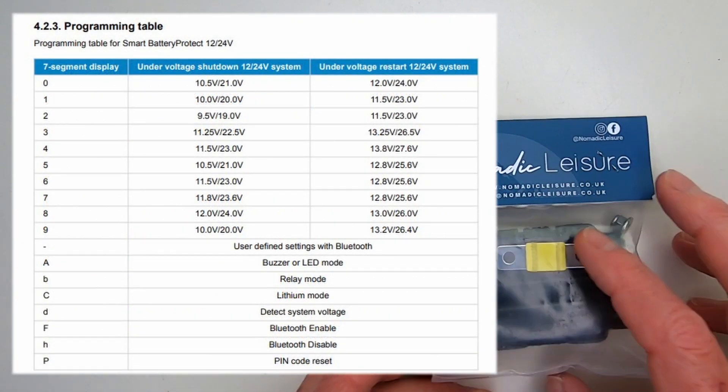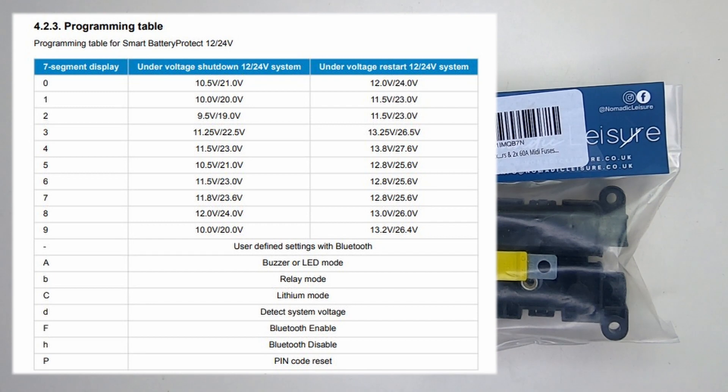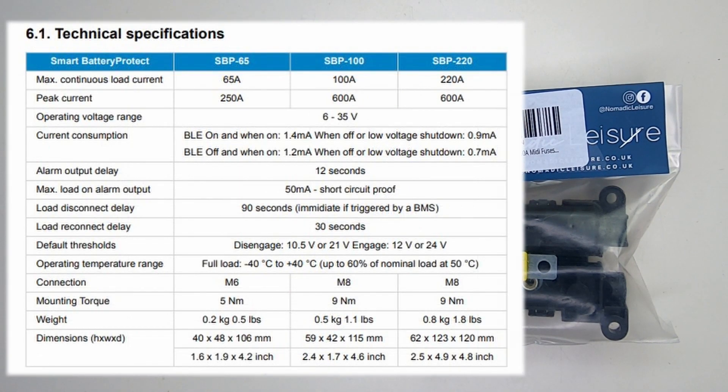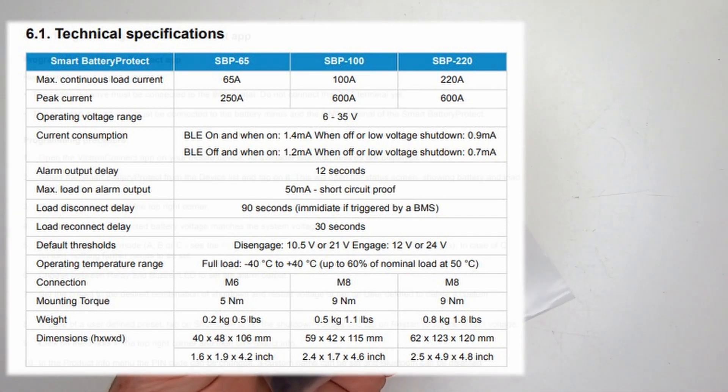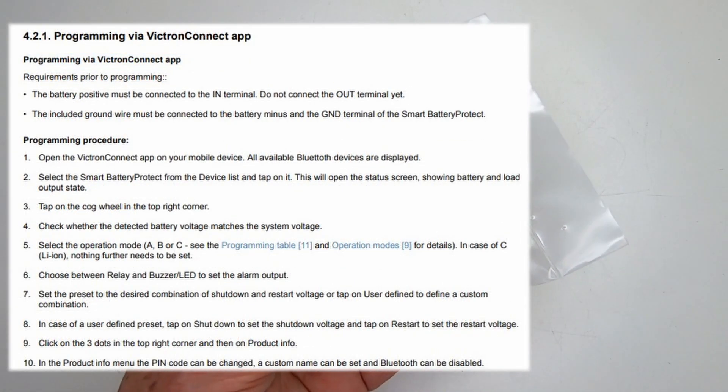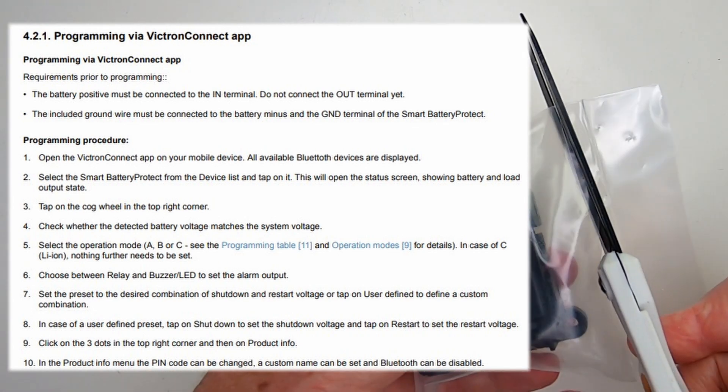The Victron presets seem to bear zero relationship to AGM batteries with what must be a bias towards lithium batteries. This further reinforces the decision to buy the smart version of the unit rather than the basic version, because you can easily apply custom settings via the Victron connect app.